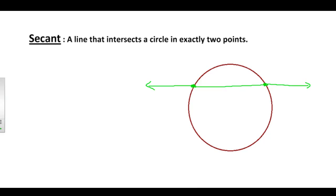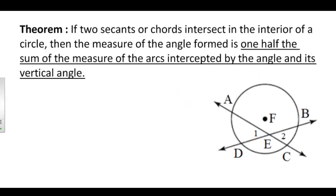I could draw any number of secants — another secant that intersects the circle exactly two times. There are a few theorems that go along with this section, and each of the next three theorems deals with a different case: whether the angle created has its vertex inside the circle, outside the circle, or on the circle. This theorem says: if two secants or chords intersect in the interior of a circle, then the measure of the angle formed is half the sum of the measures of the arcs intercepted by the angle and its vertical angle. Notice we have two secants: secant AC and secant BD, intersecting here on the inside of the circle.